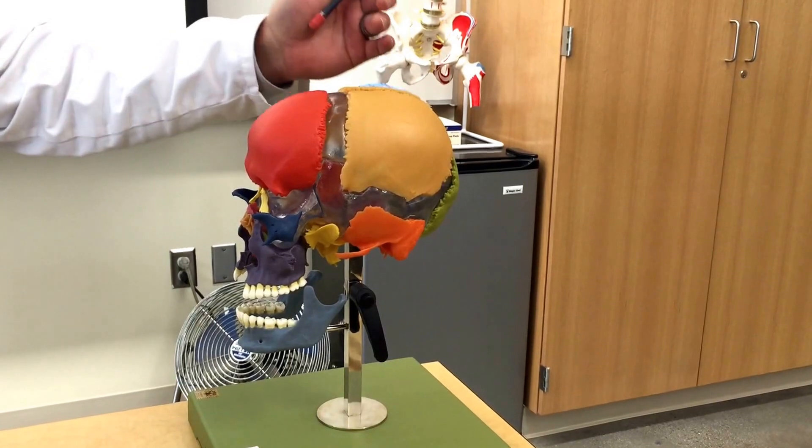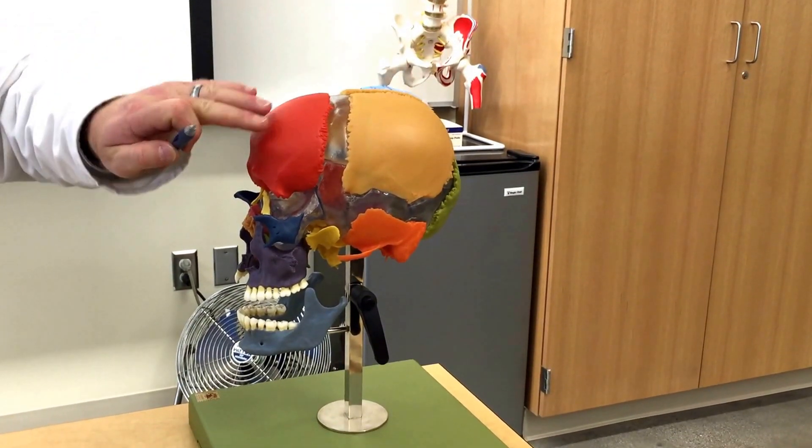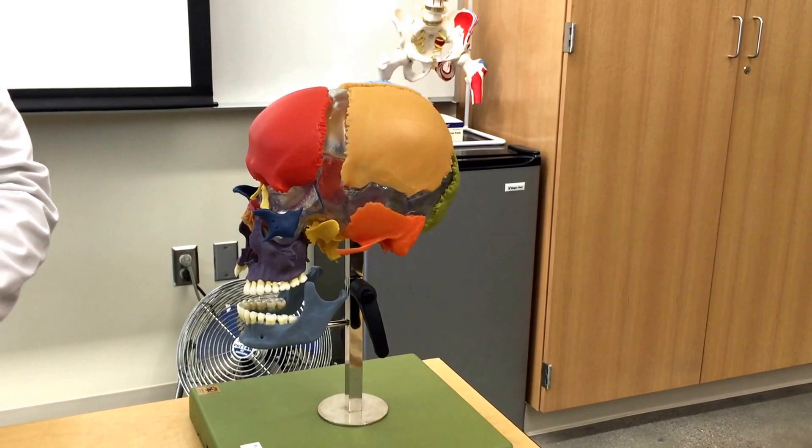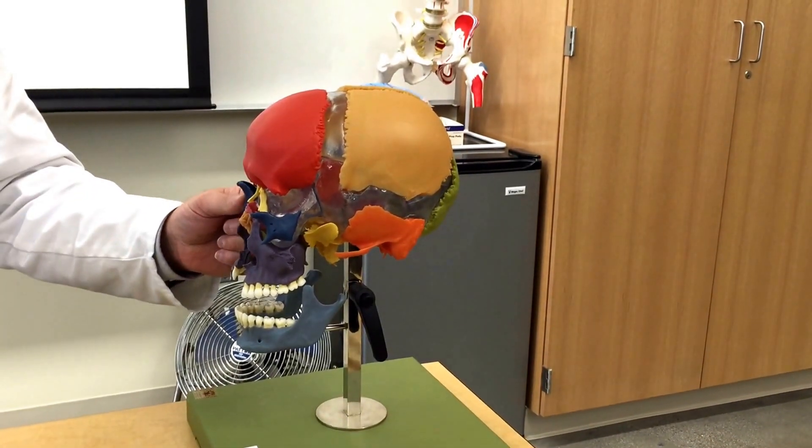So this is the right parietal, this is the left, this is the frontal bone and they're joined by the coronal suture or frontal suture. Coronal is preferable.